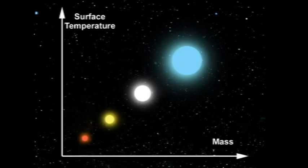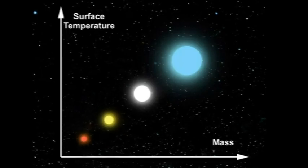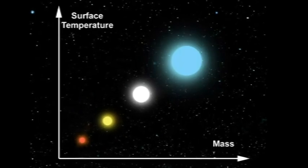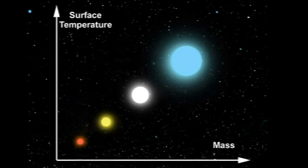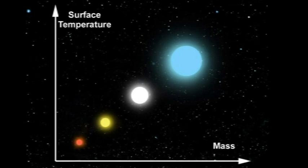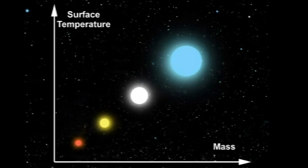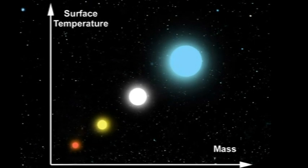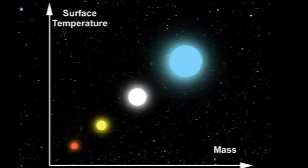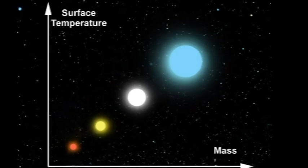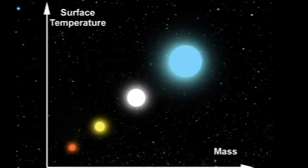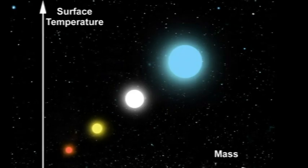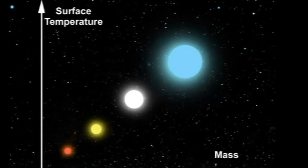The mass of the resulting star determines its surface temperature, size, and colour. Like a metal bar that's heated until it glows, hotter stars are successively red, yellow, white, and finally distinctly bluish at very high temperatures.